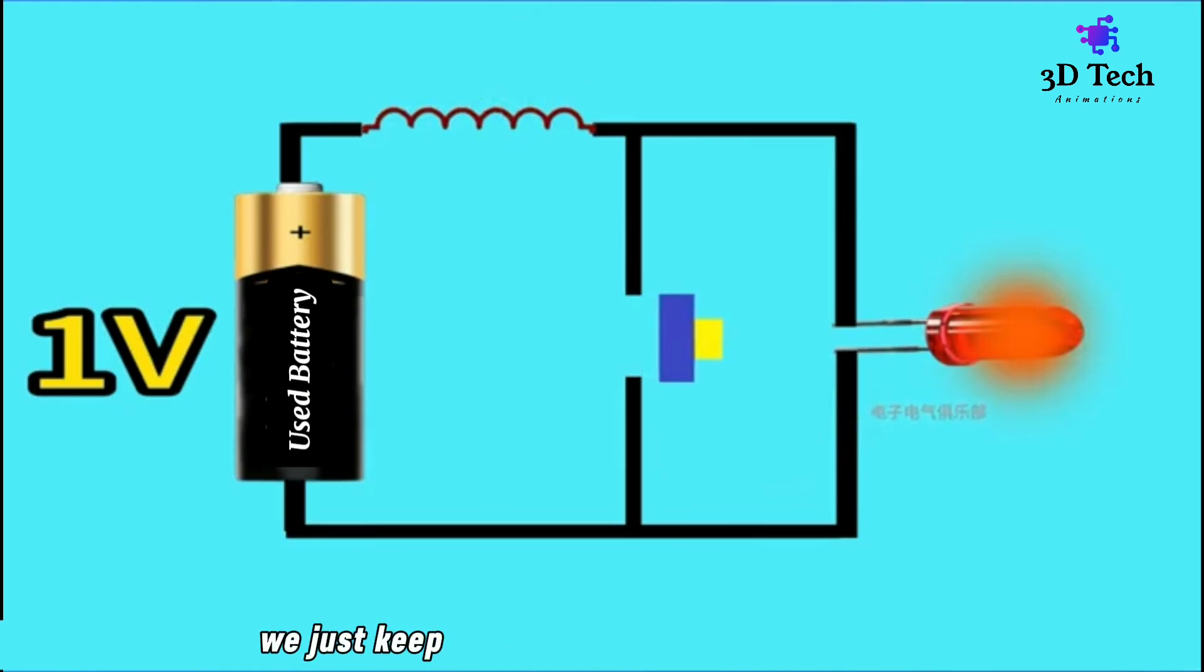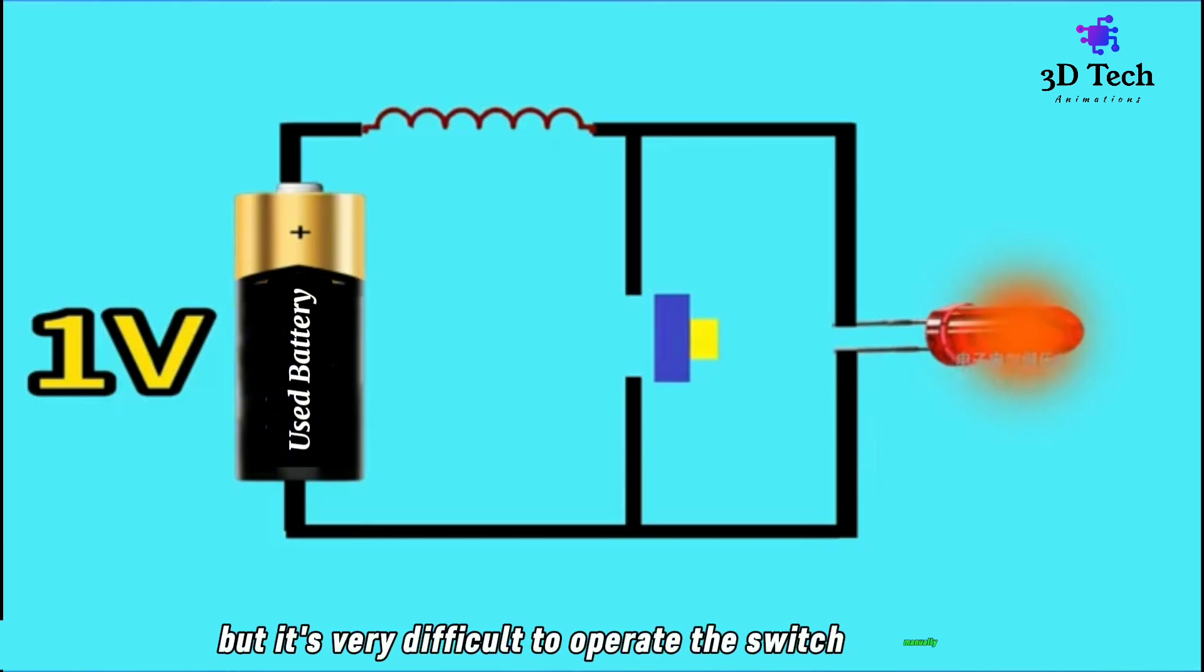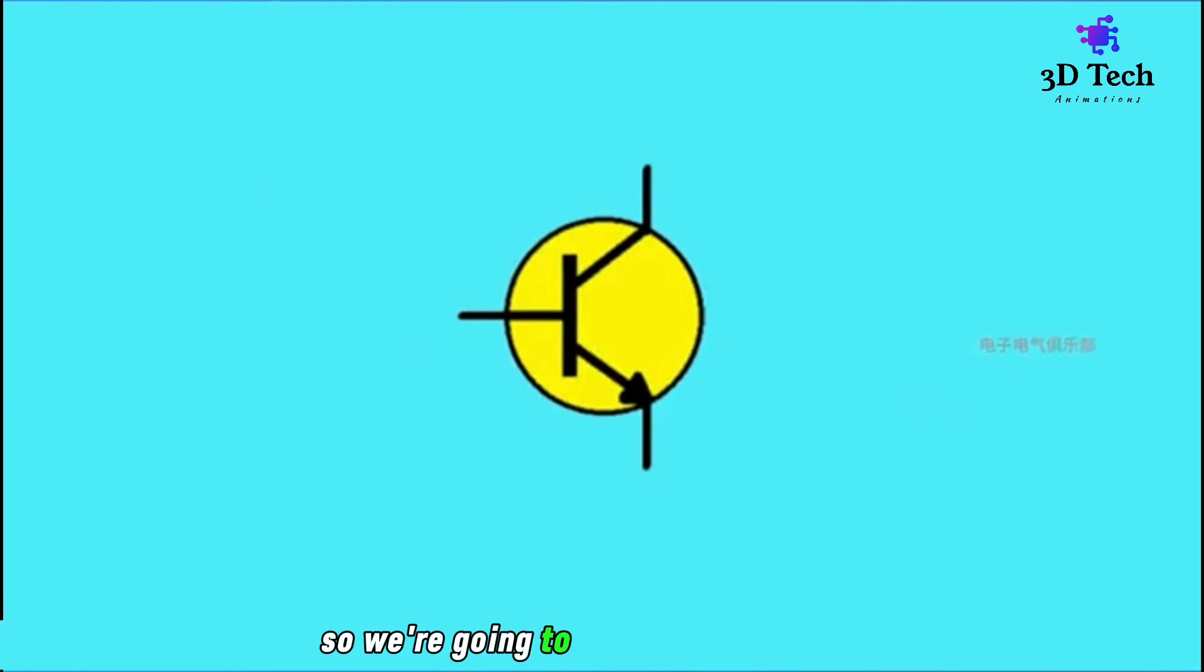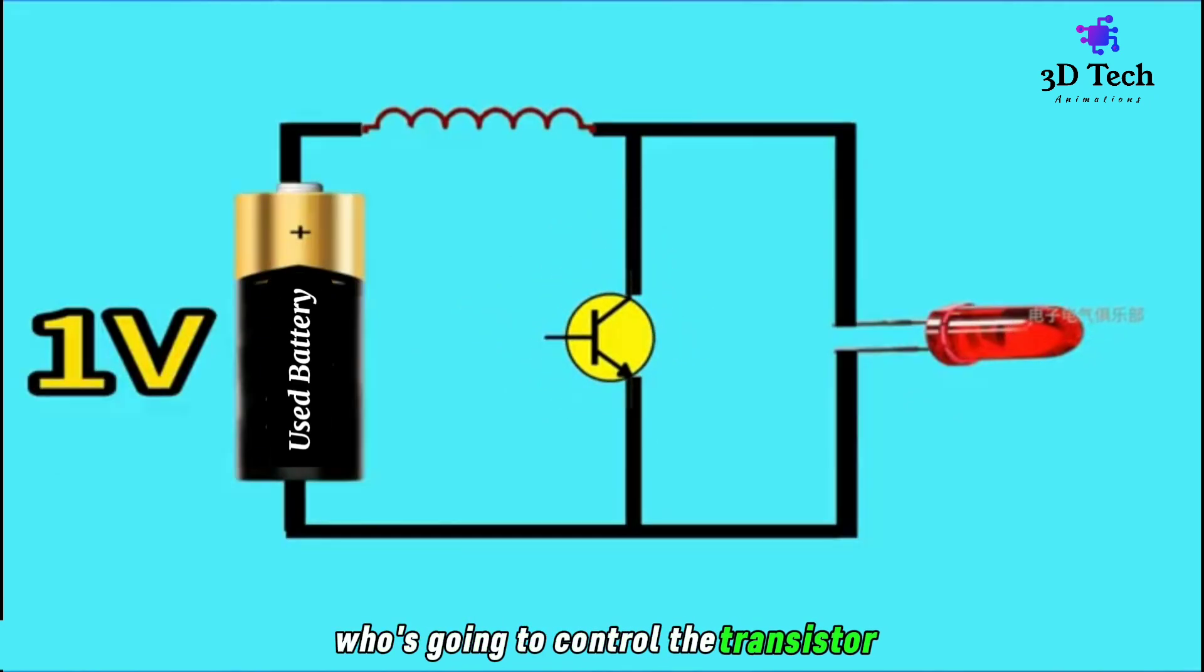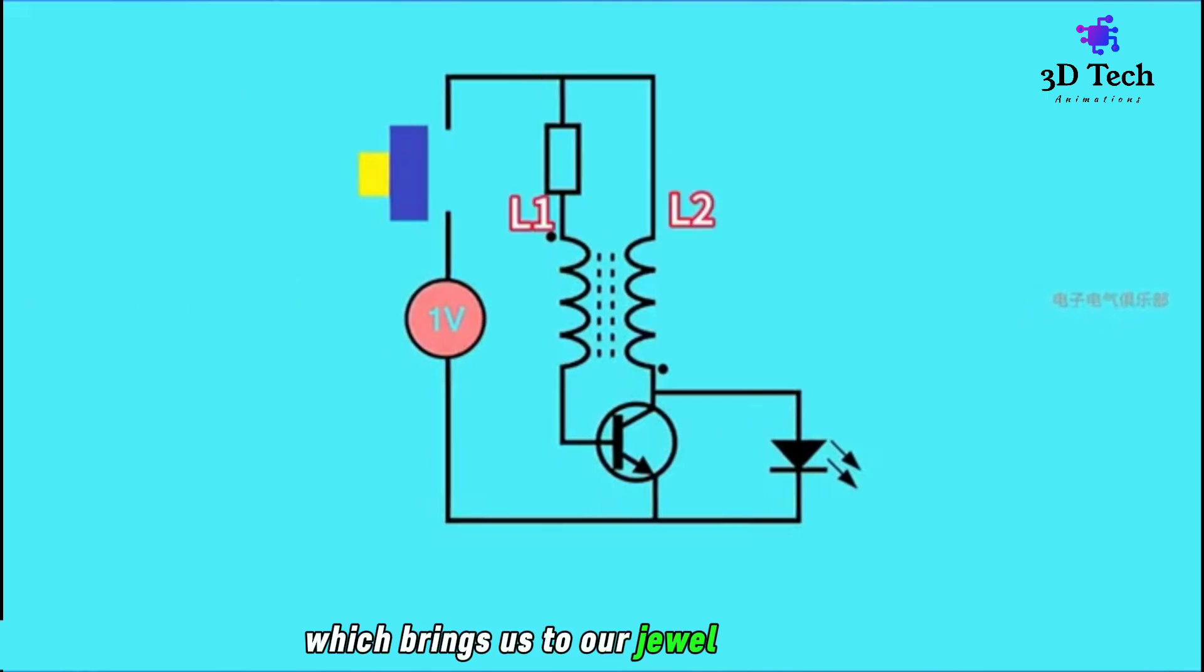We just keep closing and opening the switch to keep the LED on. But it's very difficult to operate the switch manually, so we use a transistor. This brings us to the Joule Thief Circuit.